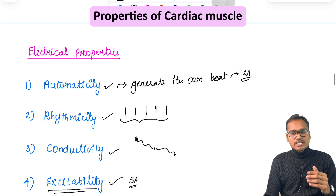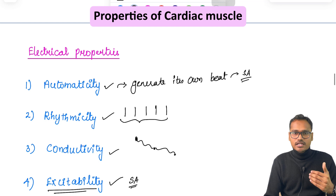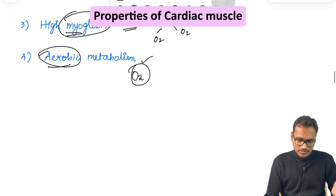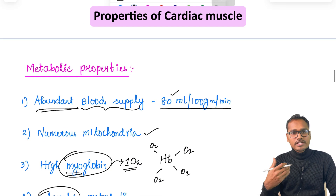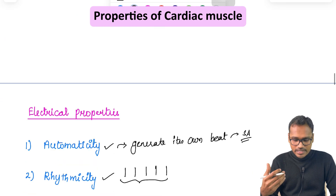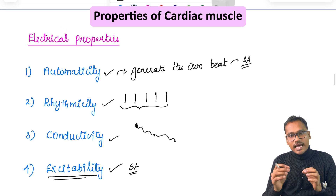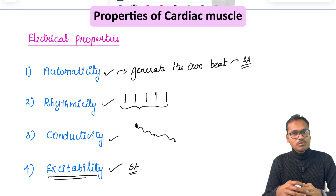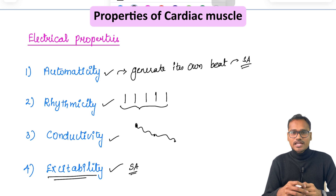So if a question is asked about the different properties of the heart, write under these four subheadings: morphological, mechanical, electrical, and metabolic properties. Further detail about the electrical properties and the action potential will be discussed in the next video. If you have any doubts regarding the properties of the heart, drop them in the comment section — I will be happy to answer. Thank you so much for watching, and we will see you in the next video.